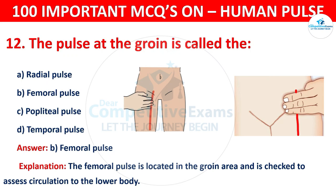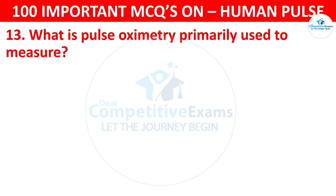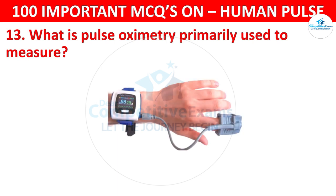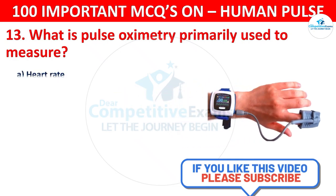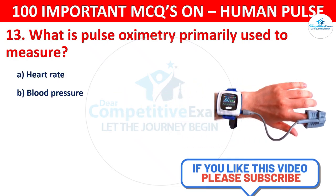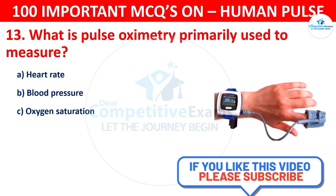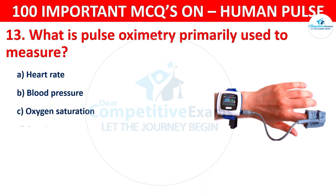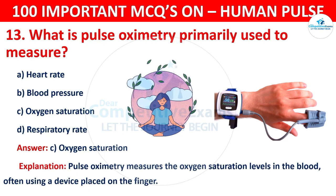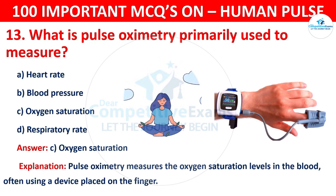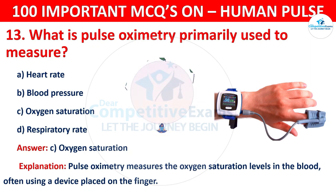Question number 13: What is pulse oximetry primarily used to measure? Your options are: Heart rate, Blood pressure, Oxygen saturation, or Respiratory rate. The correct answer is C, that is oxygen saturation. Pulse oximetry measures the oxygen saturation levels in the blood, often using a device placed on the finger.